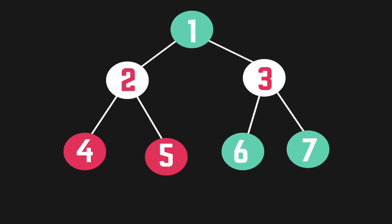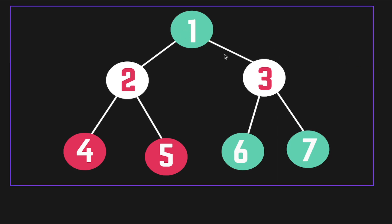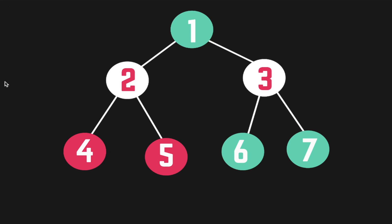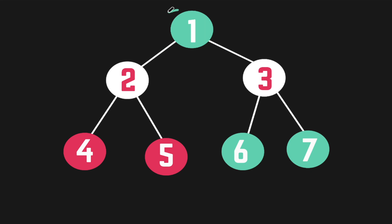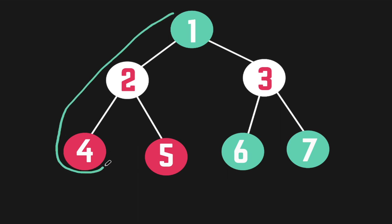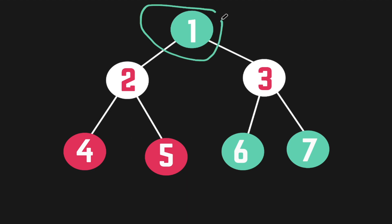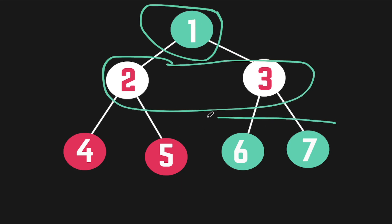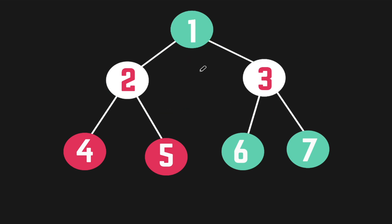Right here you can see we have a binary tree with the root node of one, and one has two children: two and three. In a depth first search, we start at the root node and look at the left children first. As you can imagine, that child could have other children of its own, so we go down deeper until we get to the end of the branch. This is in contrast with breadth first search, which starts at the root and then looks at all children level by level.